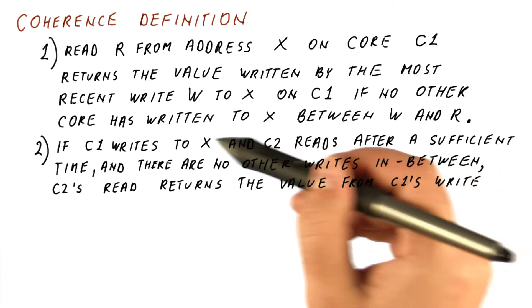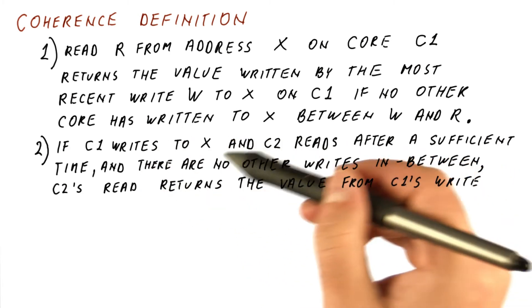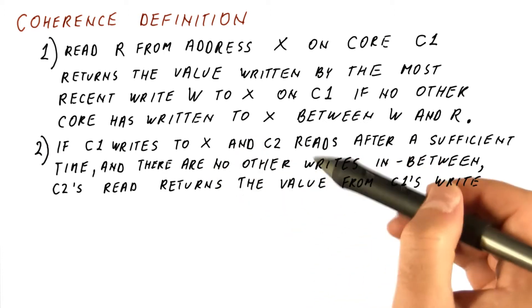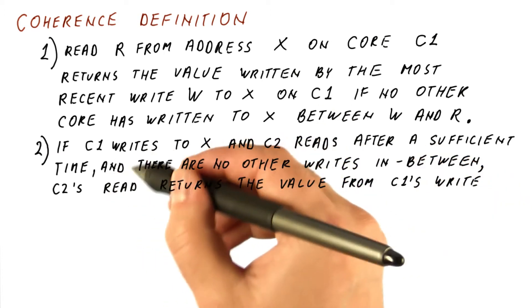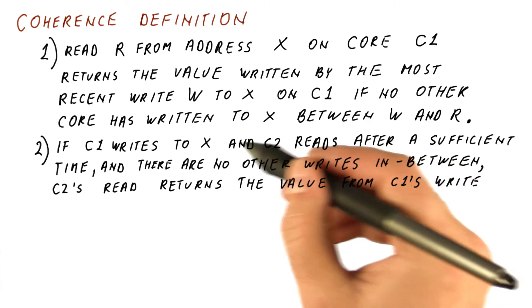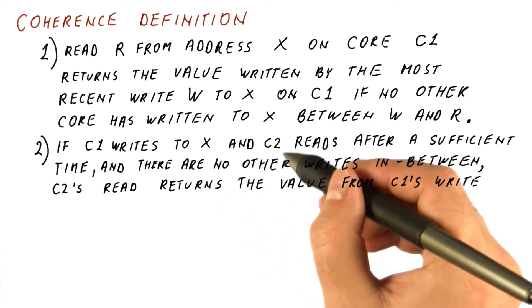So we have to do something in order to make this part of the definition work for private caches that are caching data in a coherent system. So we must do something to make these caches behave this way.